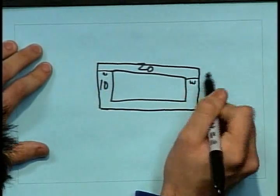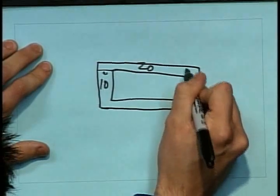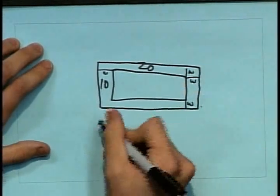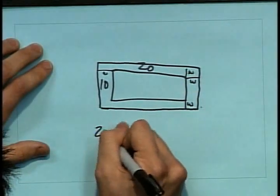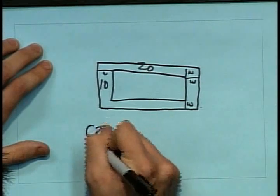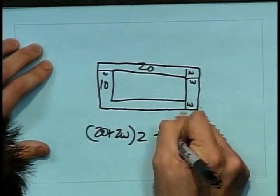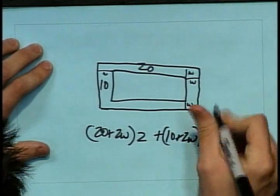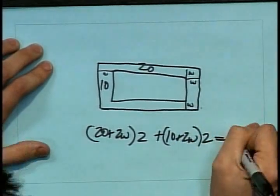This is W. This is W. This is W. So, it's an algebraic equation. 20 plus 2W times 2 plus 10 plus 2W times 2 equals 92.